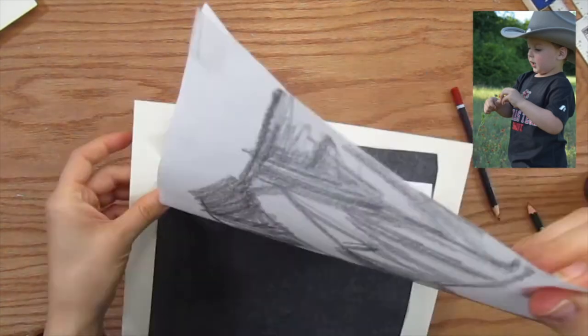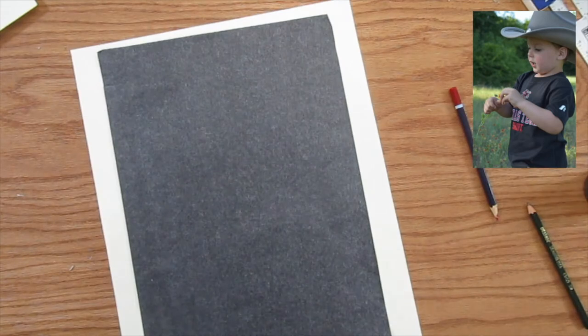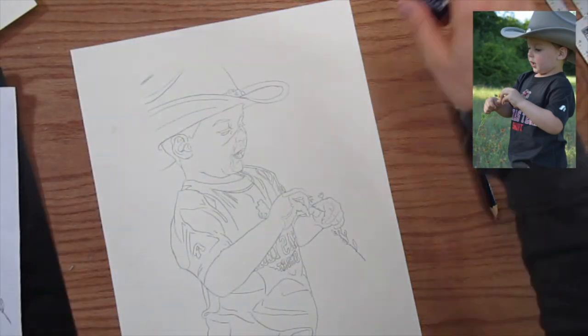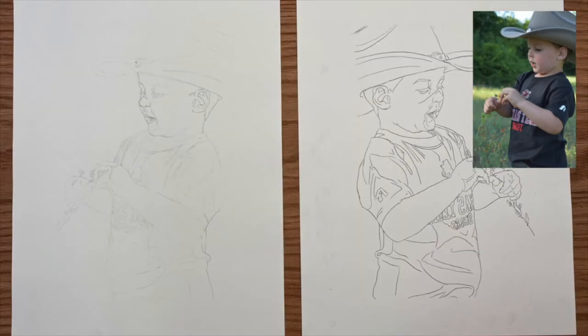Using graphite paper does result in much cleaner lines with your finished product. Here are the finished sketches. The one on the left is where I flipped my page over, and the one on the right is using graphite paper as a transfer method.